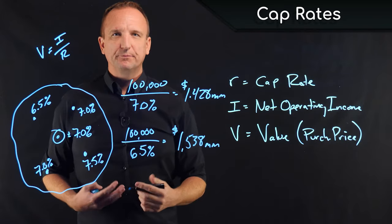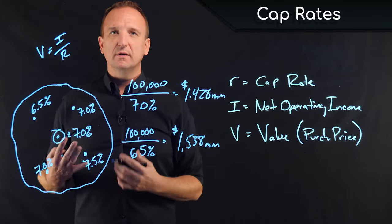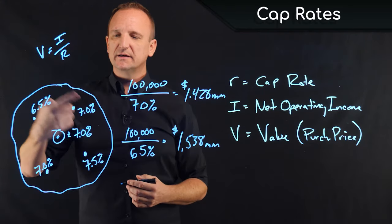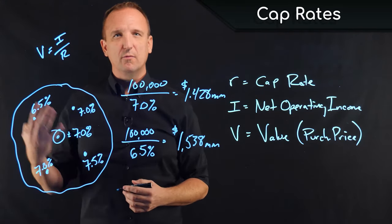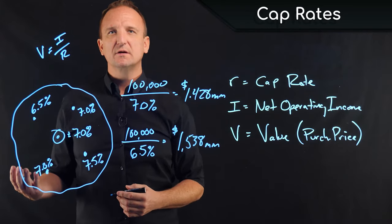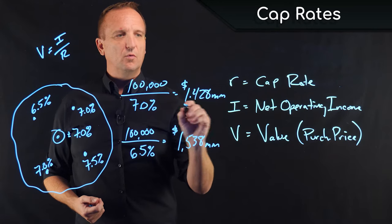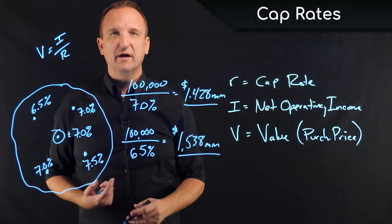The point there is that quite often, especially as a seller, the net operating income is relatively fixed. And using existing market cap rates from recent comparable sales, the seller can plug that number in and determine what their estimated market value is.